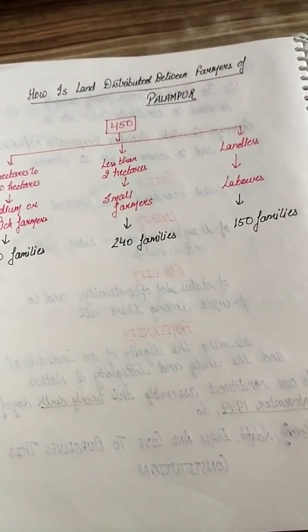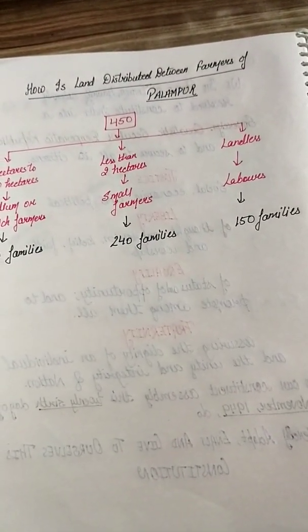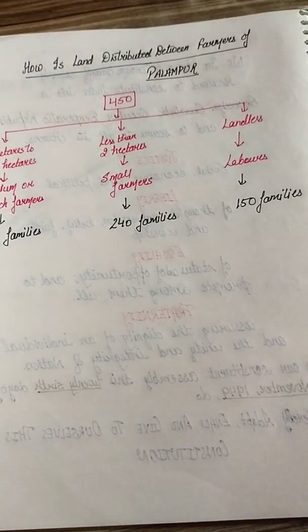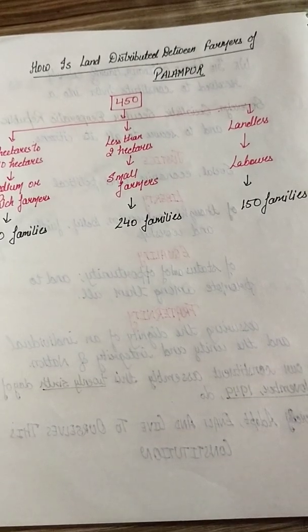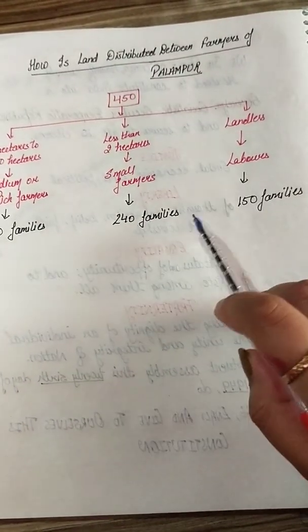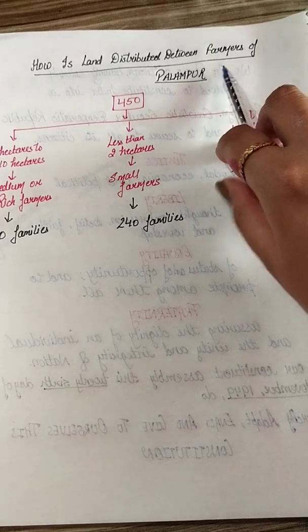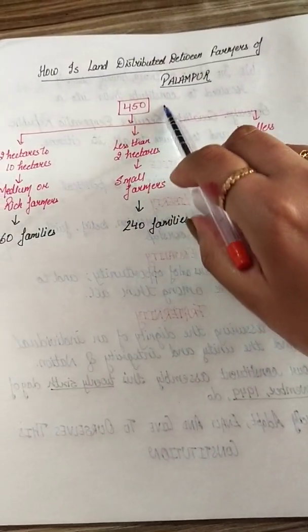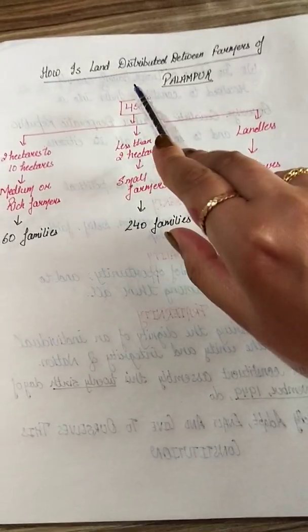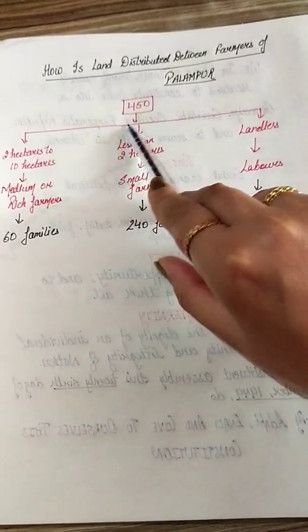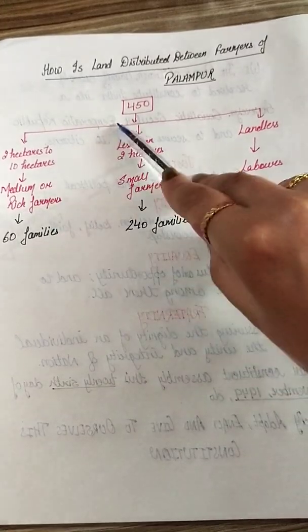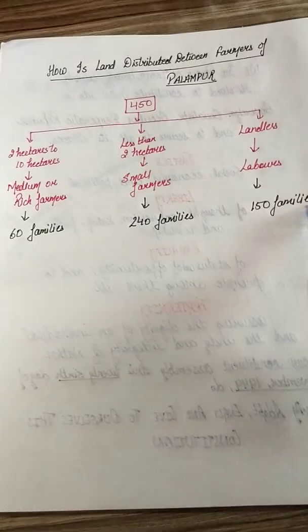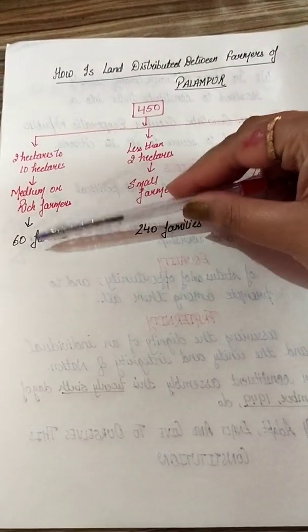Welcome back, dear students. This is our last video of the chapter 'The Story of Village Palampur.' In the last video we read about how land is distributed among farmers of Palampur. The total number of families is 450, divided as follows: 60 families, 240 families, and 150 families.